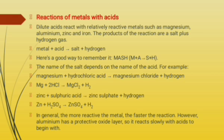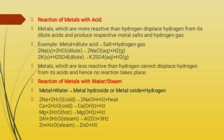Metals like gold and platinum do not react with dilute acid. Non-metals generally do not react with acid. Some non-metals like sulfur and phosphorus react with hot concentrated sulfuric acid and nitric acid, but they do not produce hydrogen gas. Most metals do not react with alkali. However, aluminium and zinc can react with sodium hydroxide or potassium hydroxide to form their salt and produce hydrogen gas.